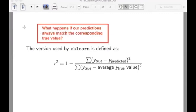Now let's notice something. What happens if our predictions always match the corresponding y-value? Then this y-predicted would just become y-true. So you have y-true minus y-true. This would become 0, and you'd be adding up a bunch of zeros. You would just end up with minus 0, which is 1.